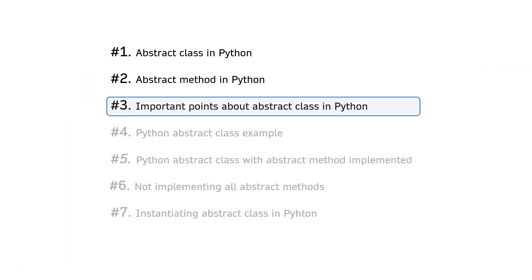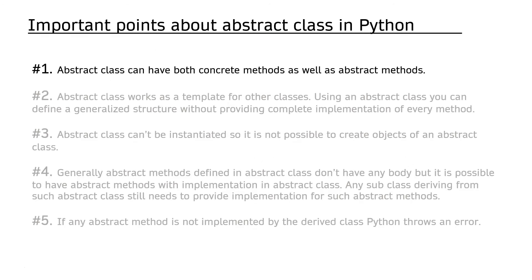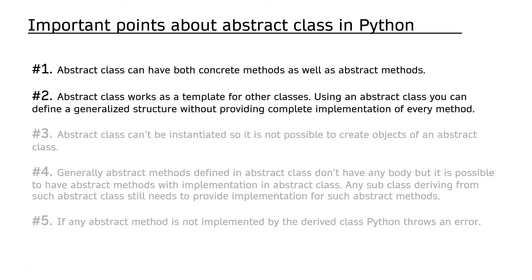Important points about abstract class in Python: First, an abstract class can have both concrete methods as well as abstract methods. Second, an abstract class works as a template for other classes — using an abstract class you can define a generalized structure without providing a complete implementation of every method. Third, an abstract class cannot be instantiated, so it is not possible to create an object of an abstract class.